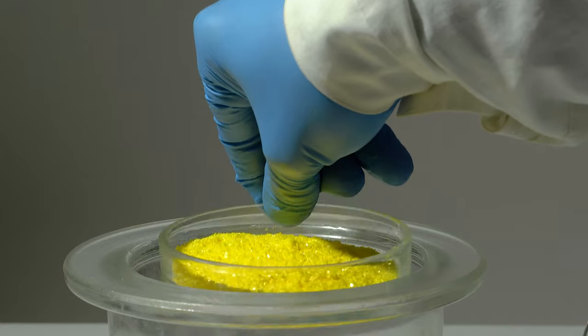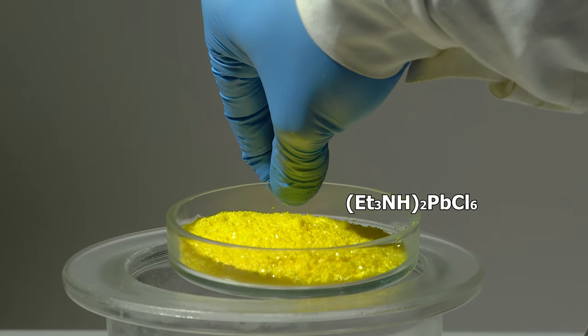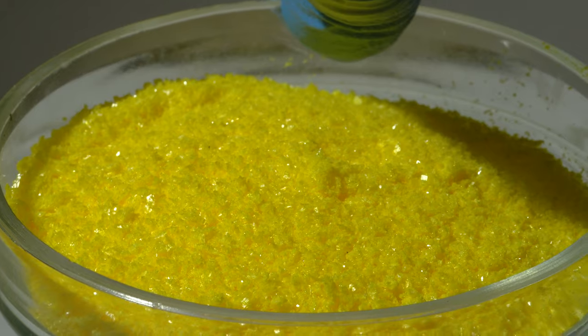After all these steps are completed, we get dry gold yellow triphenyl ammonium hexachloroplumbate crystals.